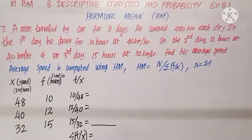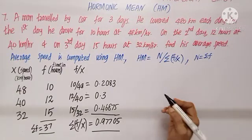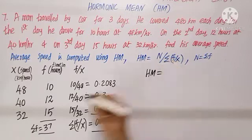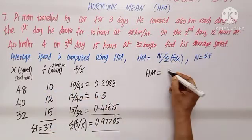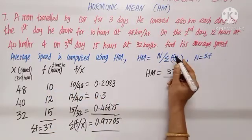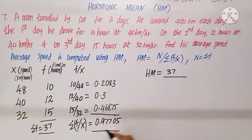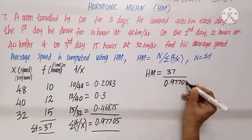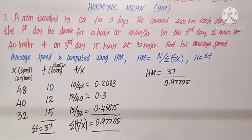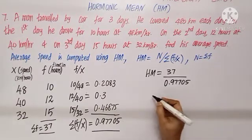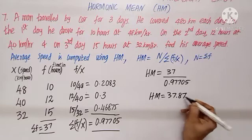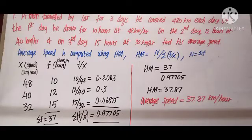Calculating and totaling sigma(f/x), we get 0.97705. N equals total frequency = 37. HM = 37 divided by 0.97705, giving HM = 37.87 km per hour as the average speed.